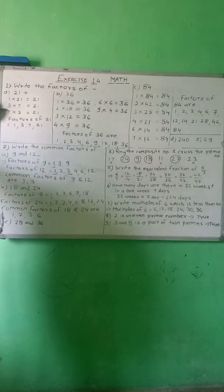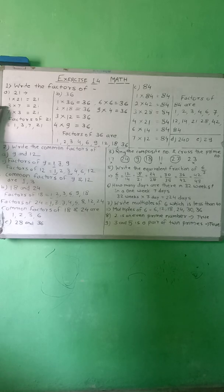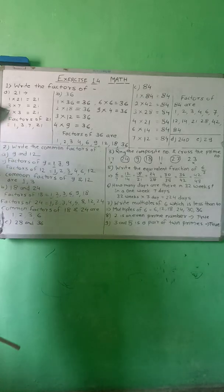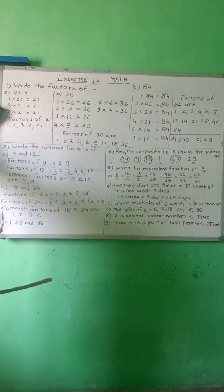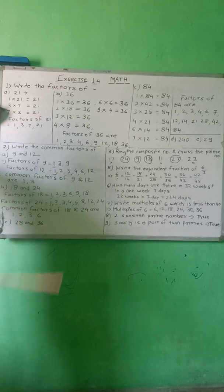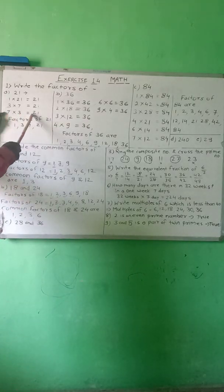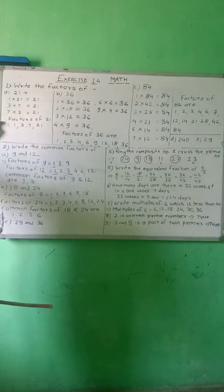So you take the next number, 3. In the 3 times table, 21 is present: 3 times 7 is 21. Next, 4 — 21 is not present in the 4 times table. In 5, also 21 is not present. In the 6 times table, 21 is not present. Next, 7 — 7 is in 21, so write here: 7 multiplied by 3 is equal to 21.